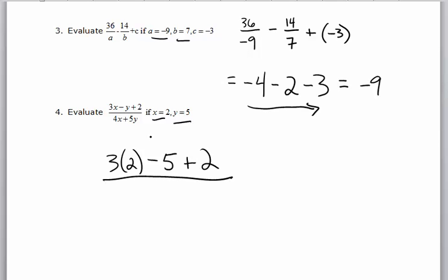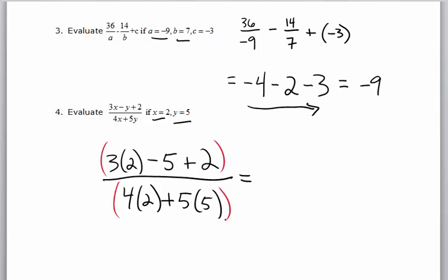On the bottom I'm going 4x, which is 4 times 2, plus 5 times y, and y is 5. So order of operations up top and then order of operations on the bottom. I don't need those parentheses, I'm just trying to group them together. First I do multiplication — that's going to be 6. Then going left to right at the addition and subtraction level.